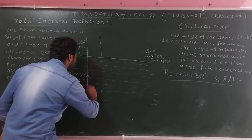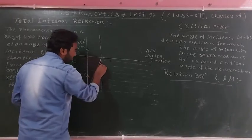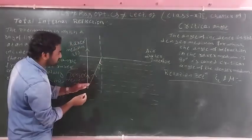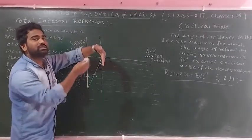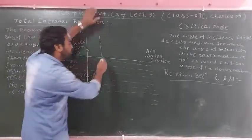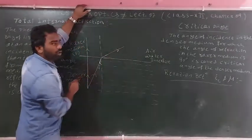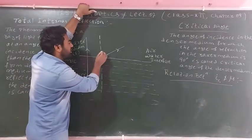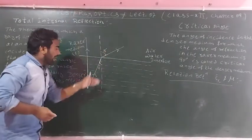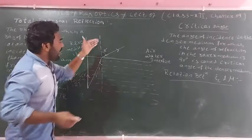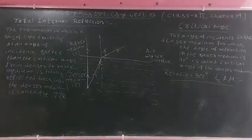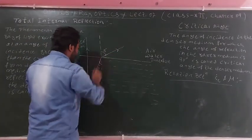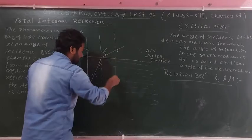When the ray of light travels from denser medium to rarer medium, the refracted ray is away from the normal. For a small angle of incidence, this is the angle of refraction. As you increase the angle of incidence, the angle of refraction also increases.